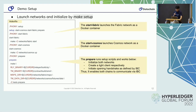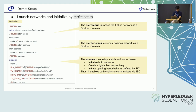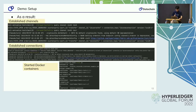Next, we have to launch networks and initialize by running make setup. The setup script kicks off three more scripts: start-fabric, start-cosmos, and prepare. The start-fabric and start-cosmos scripts run each network as a Docker container. The prepare script initializes both networks, creates both light clients and their initial states, and initiates the opening handshake as described by IBC. Each blockchain checks if the initial states are correct. After we run the setup script, we can see that channels and connections are established and the containers are running.